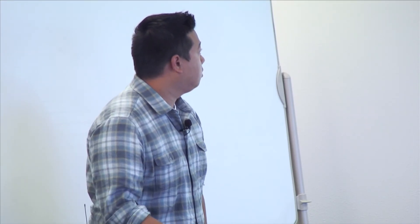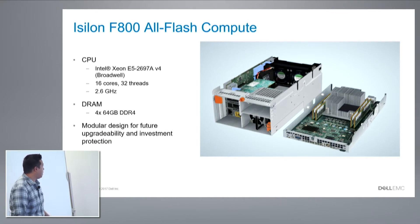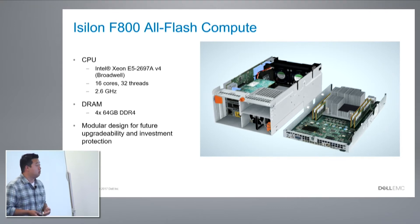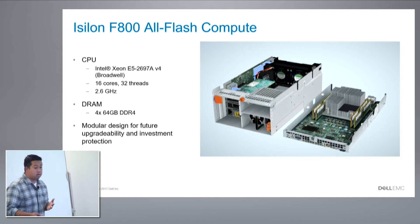With the sled design, given that you can completely pull it out and it's not attached, it's future-proof for any sort of flash media we want to support in the future. The compute node — this is an exploded view — is Broadwell-based: 16 cores, 32 threads, 2.6 GHz. DRAM is 464 GB DDR4. Similar to the sleds, it's modular by design for future-proofing, so if there's a new CPU SKU we want to release or drop in, you should be able to get that into a compute node and replace it as part of an upgrade.